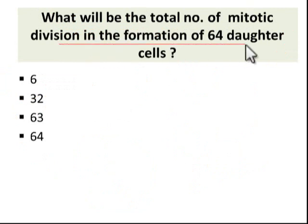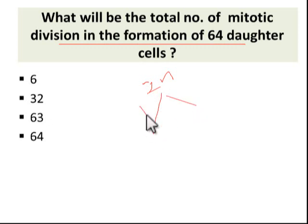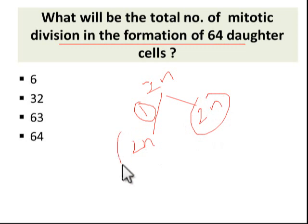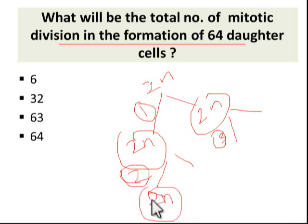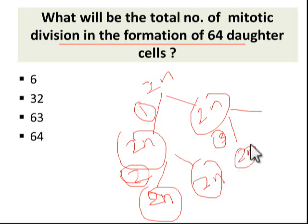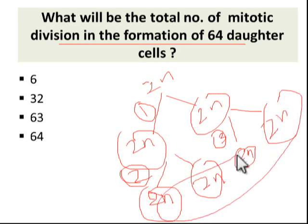What will be the total number of mitotic divisions required for the formation of 64 daughter cells? Starting from a parent cell (2N), one mitotic division gives 2 daughter cells (2N each). In the second division, those 2 cells divide to give 4 cells. In the third division, we get 8 cells. So after each division, cell numbers double — after 3 divisions we have 4 cells shown here.